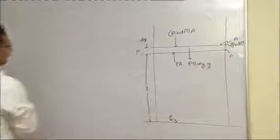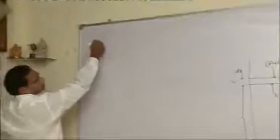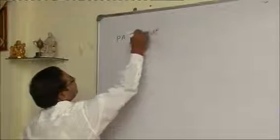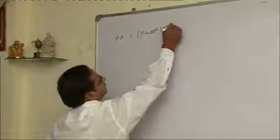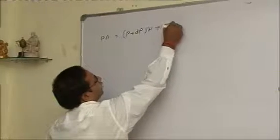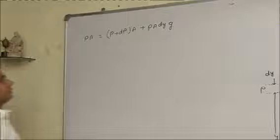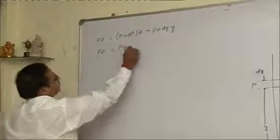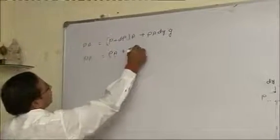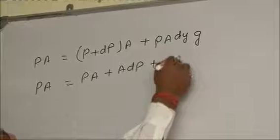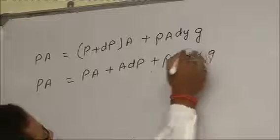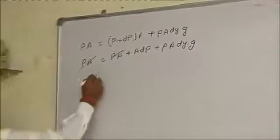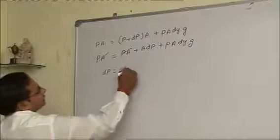PA equals P plus dP into A plus rho A dy into g. PA equals PA plus A dP plus rho A dy into g. Cancel A, then we can say dP equals minus rho g dy.